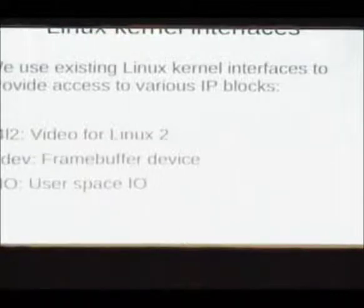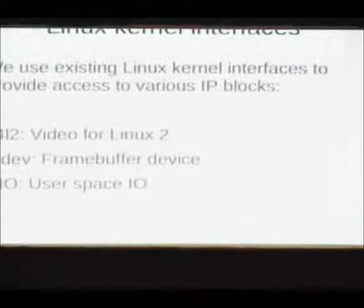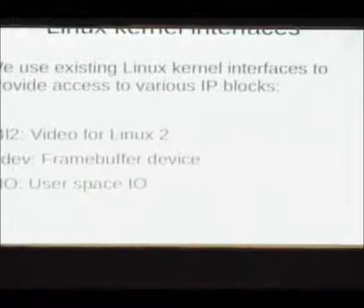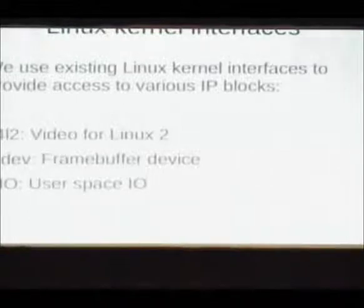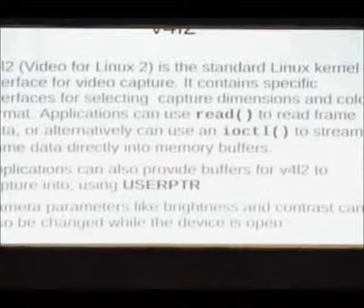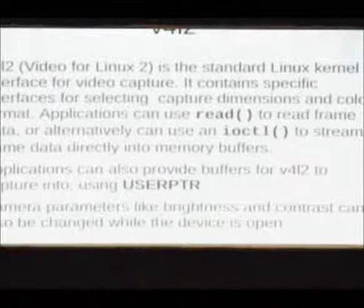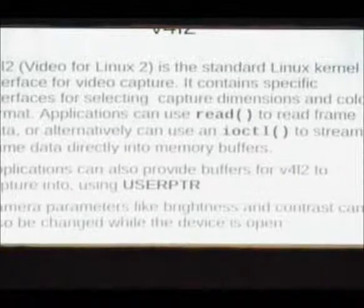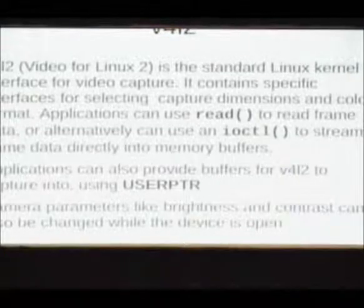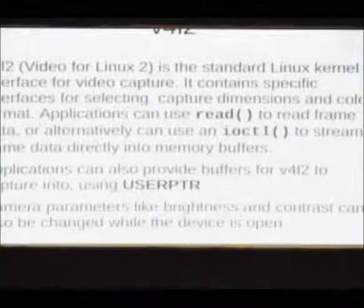So that's the hardware available. I'm going to concentrate on how we use the VEU — how we access it and do resource management for it. To do something like this with a camera set up, the kernel interfaces we use are V4L2, fbdev, and UIO (user space IO). V4L2 is a standard Linux kernel capture interface. It has a simple streaming read interface — you can do a straight read system call, though it's pretty inefficient as it involves copying. Most people here have probably used a V4L2 camera.